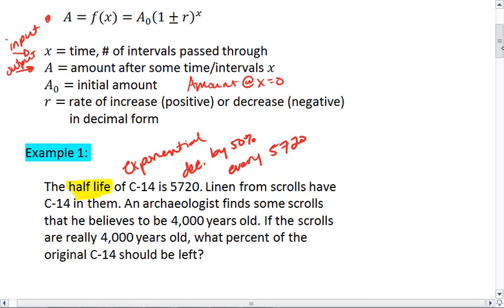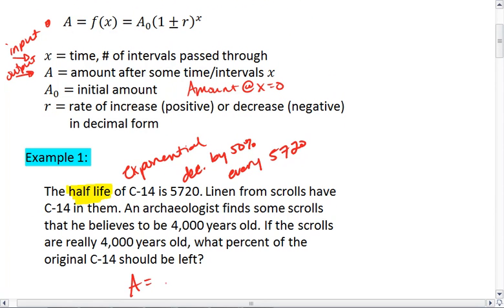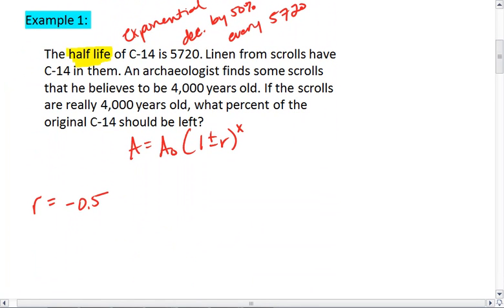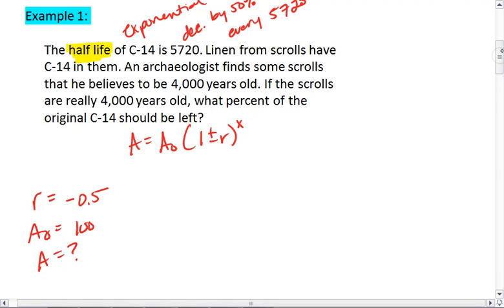Let's go back to our equation. So we have A equals A sub 0, 1 plus or minus r to the x. The initial amount of C14 is going to be 100%, so we'll just use 100. We want to know how much percent is left after a certain number of years. And x is going to be the number of 5,720-year increments we go through.